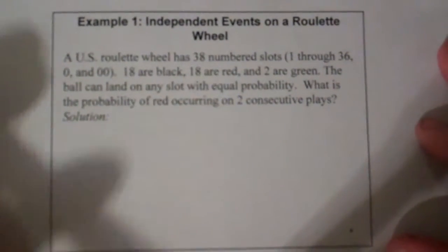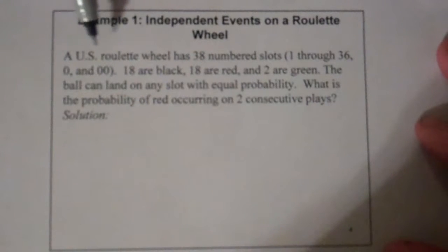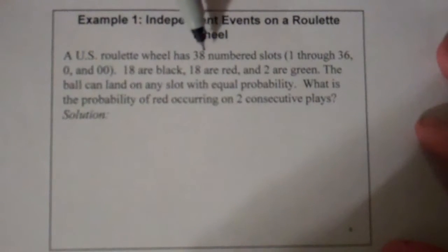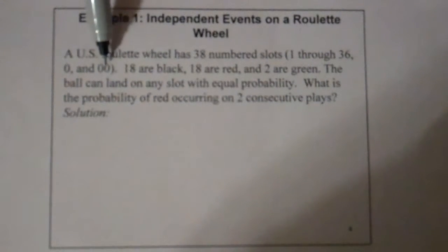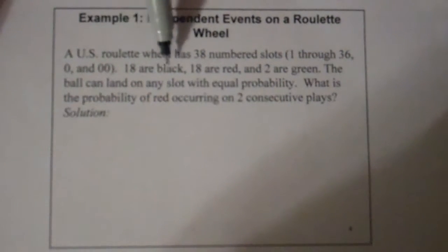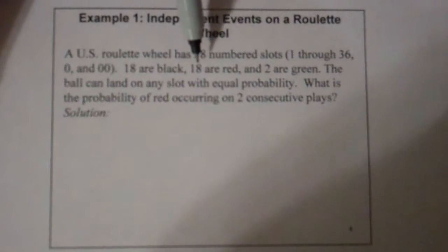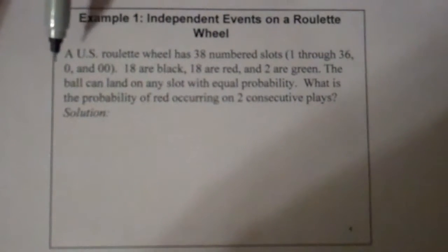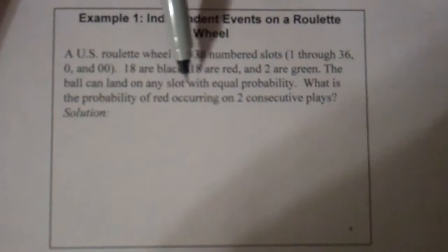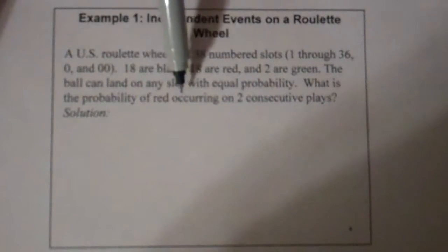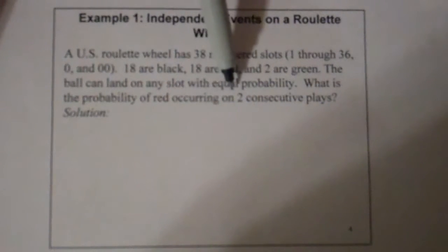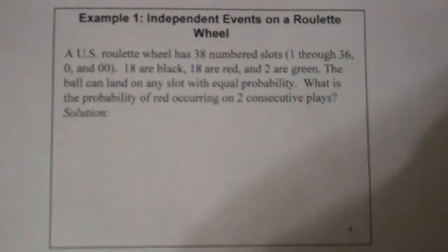Let's look at an example. A U.S. roulette wheel has 38 numbered slots: 1 through 36, 0 and 00. 18 are black, 18 are red, and 2 are green. The ball can land on any slot with equal probability. What is the probability of a red occurring on two consecutive plays?